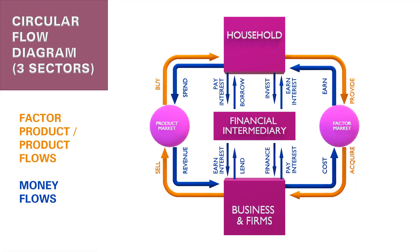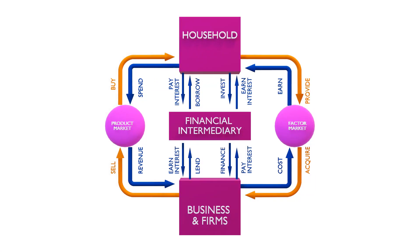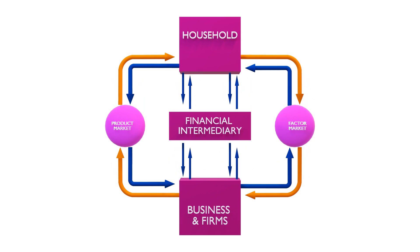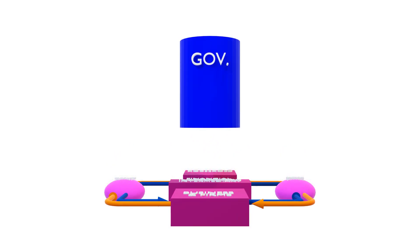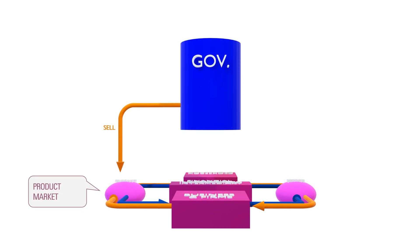We now have a three-sector diagram. Next we add the government. The government regulates the three-sector economy and also participates in both the product market and the factor market. In the product market, it sells public products and earns revenue.